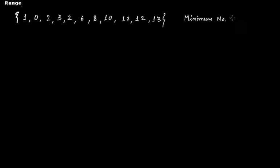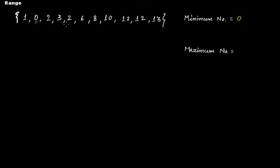From this data set you can see values like one, zero, two, three, two, six, eight, ten, twelve, thirteen. The best way would be to first arrange them in ascending order so that the chances of making mistakes in finding the minimum and maximum number are very low. In this case, the minimum number is zero and the maximum number is 13.